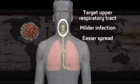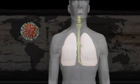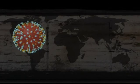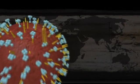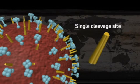Infections in the upper respiratory tract are usually milder and it's easier for the virus to spread there. It would be much more dangerous if it targeted the lower respiratory tract and the lungs. The haemagglutinin molecule has to be cut by enzymes in the body before it can enter human cells, and this virus has a single site where that happens.